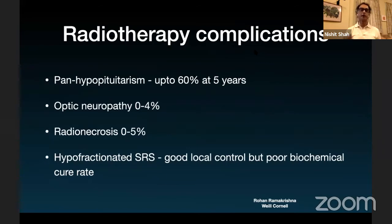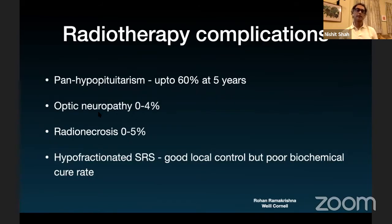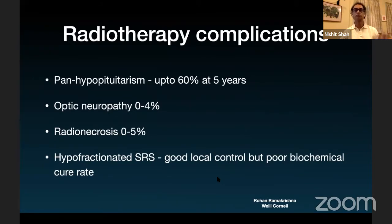Regarding radiotherapy: it is a viable option, but one must consider that at five years up to 60% will have hypopituitarism. Optic neuropathy is fortunately very low today because radiotherapy is very precise. Hypofractionated SRS gives good local control but doesn't always reflect in biochemical cures.